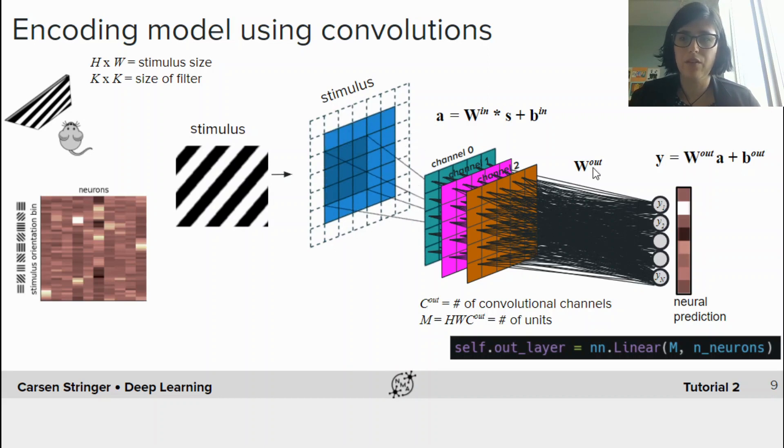One thing to note is this is a lot of weights, and so you could in fact add regularization penalties to this optimization. Indeed we do, and you could try playing with those and see how that changes the output of the network.